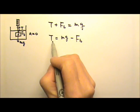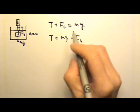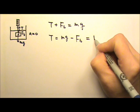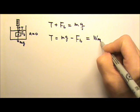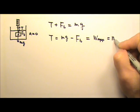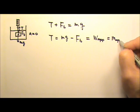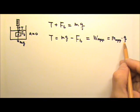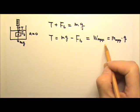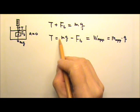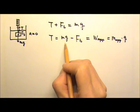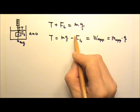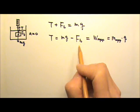In this case, the tension is the apparent weight, which means this is the apparent mass times g. This object seems lighter than its real weight — it's lighter than its real weight by the buoyant force.